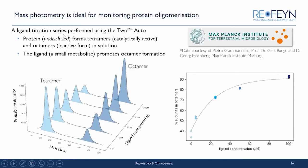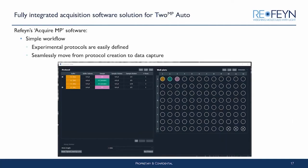This is a dataset from one of our 2MP Auto users, Dr. Georg Hochberg, based at the Max Planck Institute in Marburg, Germany. This is a ligand titration series looking at a particular protein that forms tetramers in solution as well as octamers. The tetrameric form is catalytically active, but the octamers are inactive. The introduction of a small metabolite promotes a shift into formation of the octamers — as we increase the ligand concentration, the amount of octameric complexes increases, showing a clear concentration dependency.